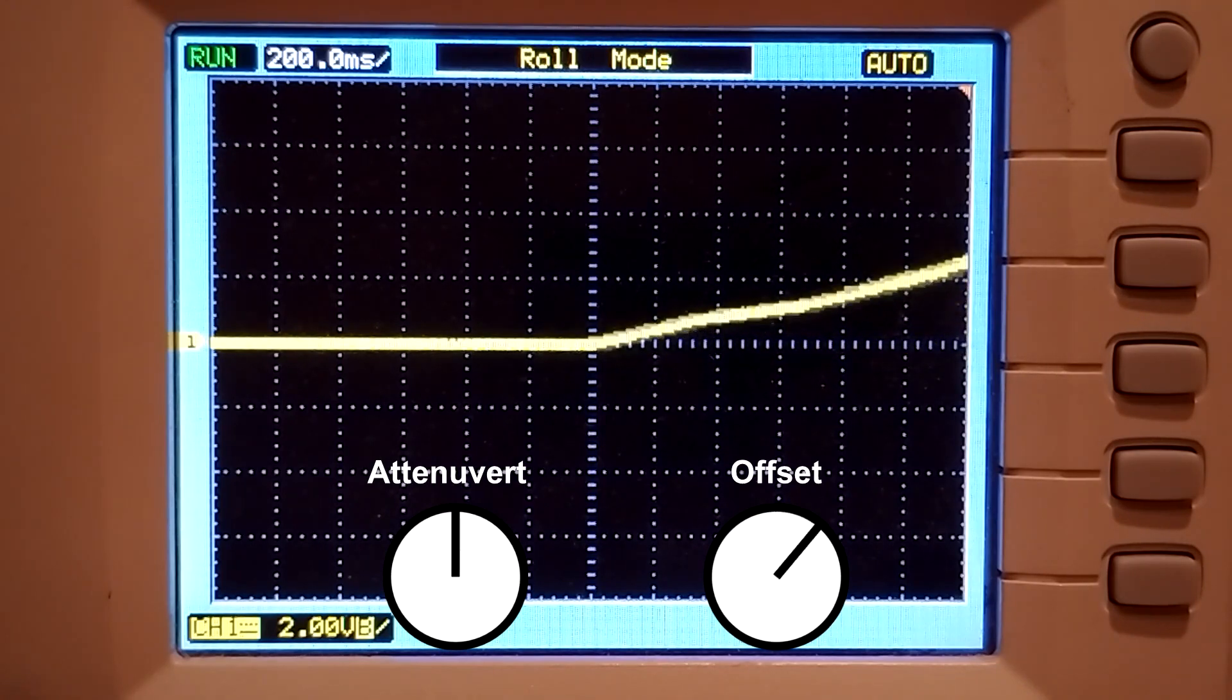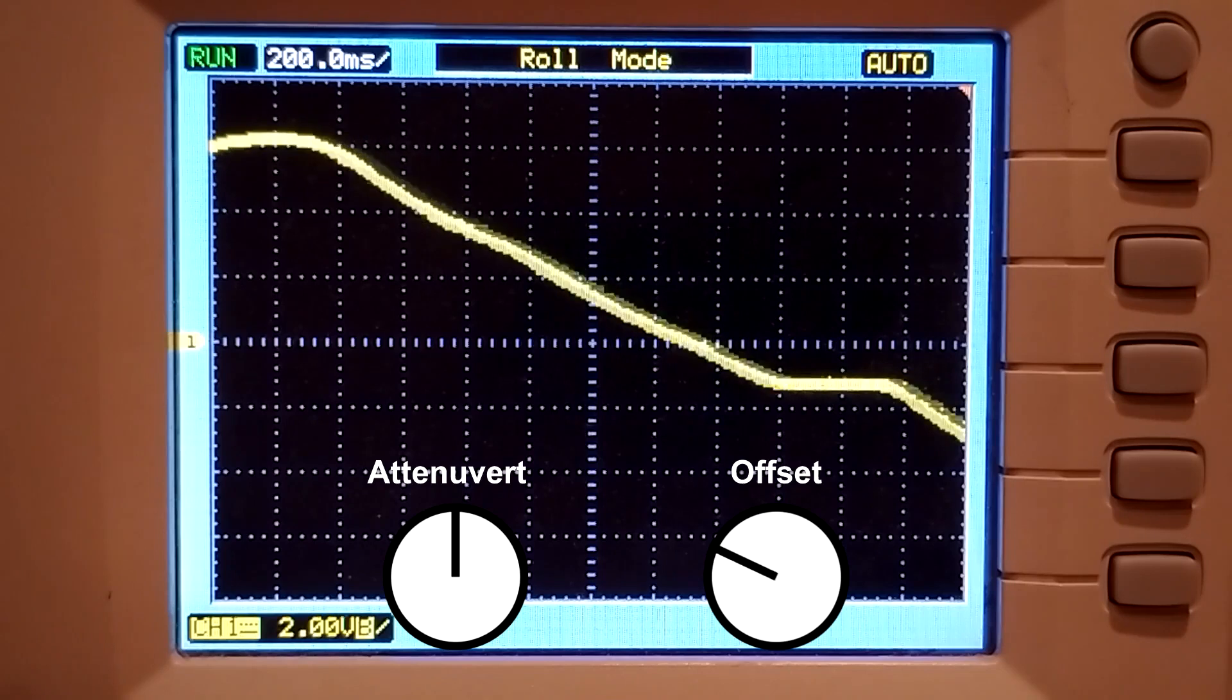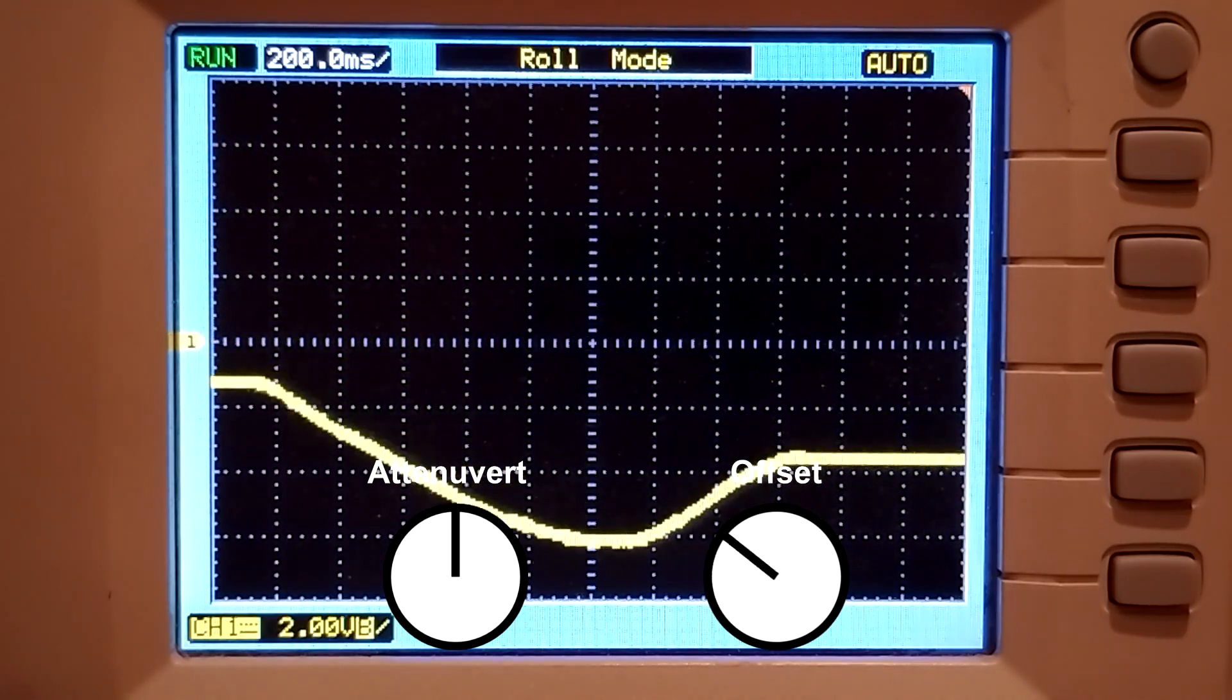With the gain at zero, no signal passes through, but in combination with the offset knob, the module now becomes a control voltage generator.